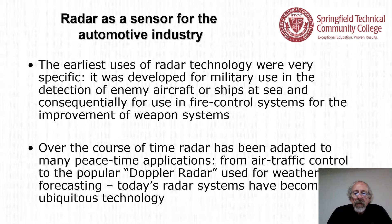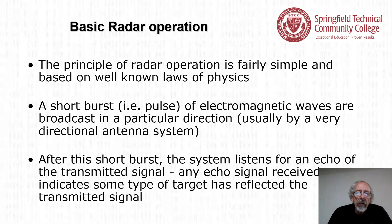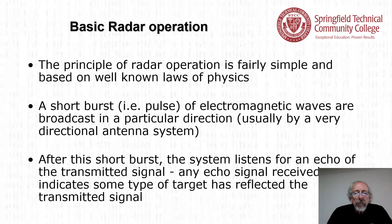Over the course of time, radar has been adapted to many peacetime applications, from air traffic control to the popular Doppler radar used for weather forecasting. Today's radar systems have become a ubiquitous technology. The principle of radar operation is fairly simple. A short burst — a pulse of electromagnetic waves — is broadcast in a particular direction, usually by a very directional antenna system. After this short burst, the system listens for an echo of the transmitted signal.